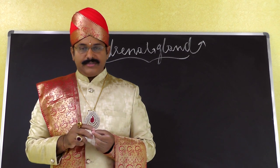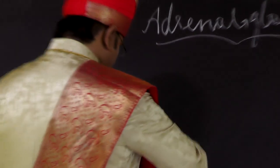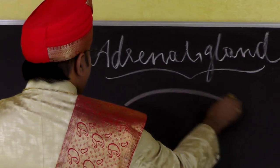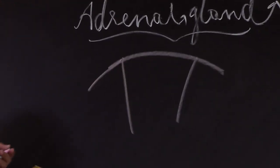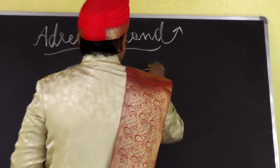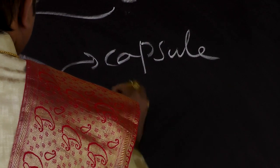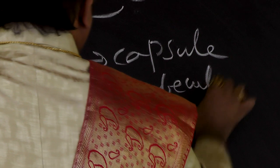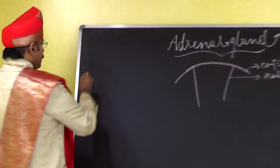The adrenal gland, like any other gland, has a capsule which sends in trabeculae along with blood vessels that go into the substance of the gland. The interior of the adrenal gland is called its substance.